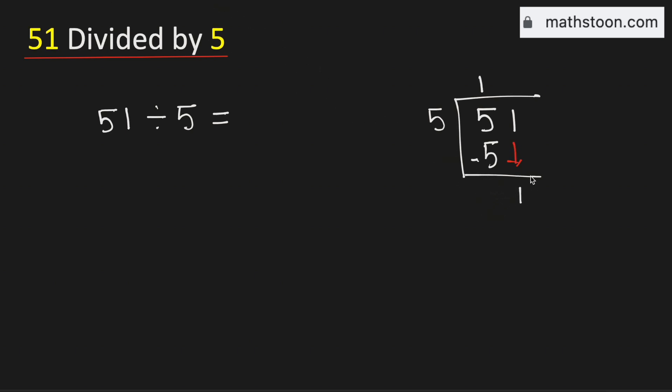As we have brought down the number 1, we need to divide it by 5. And we know that 5 times 0 is 0. Subtract, we get 1.